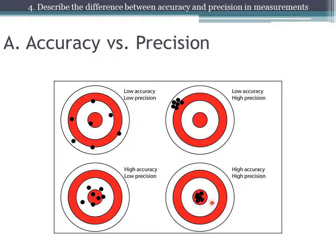Obviously, that is the goal, whether you are shooting at a target or you are measuring something. If you can measure consistently and those measurements are close to the correct answer, then you are both precise and accurate.